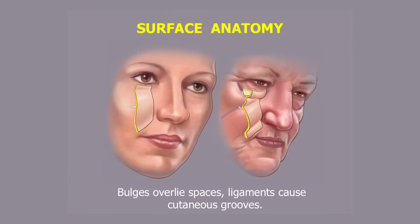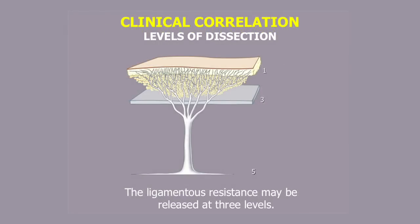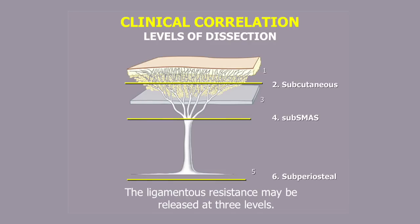The spaces and the ligaments have clinical significance. Firstly, their presence explains the appearance of aging: bulges overlie spaces, and grooves overlie ligaments. Examples include the malar mound bulge between the orbicularis retaining ligament above and the zygomatic ligaments below, and also the jowl, which is formed by laxity of the ligaments around the premasseter space. Many surgeons think they don't really need to appreciate the ligaments, but in fact all three levels of dissection — subcutaneous, sub-SMAS, and subperiosteal — involve the ligaments in some way.